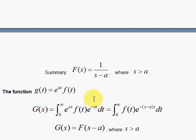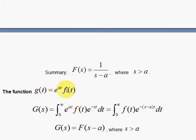Now we just did one. In fact, we can take this f of t to be 1. If that's 1, then the Laplace transform of 1 we figured out was 1 over s. But this says shift to 1 over s — we shift to 1 over s. Well, if you do that, you get 1 over s minus a, which is the result. So we could have done this one using this shifting trick. So that's nice to know.